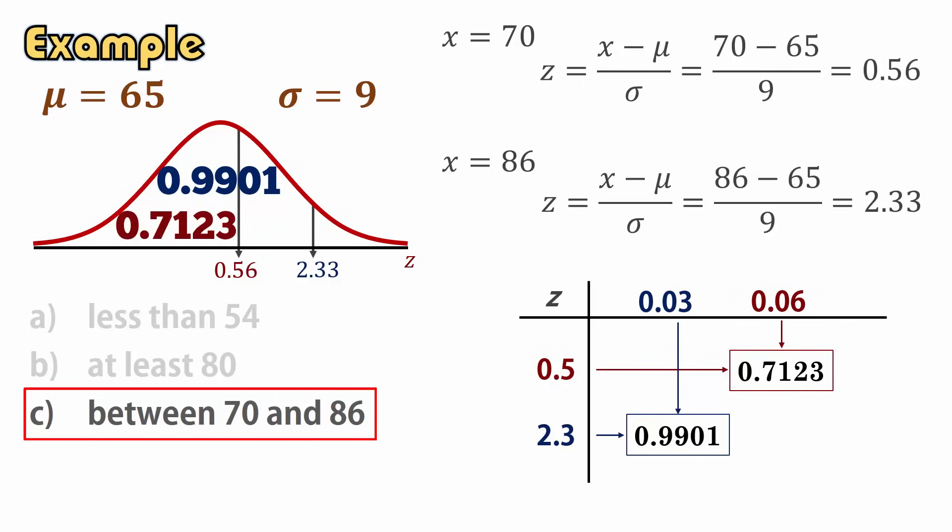When finding the area between two z values from the cumulative less than tables, we subtract the smaller area from the larger one.